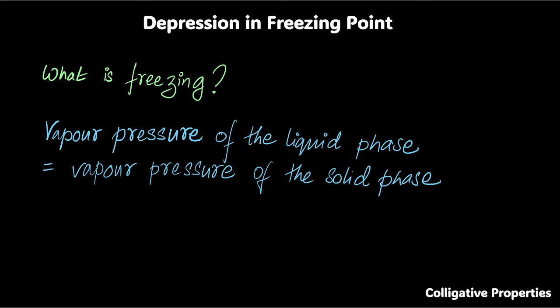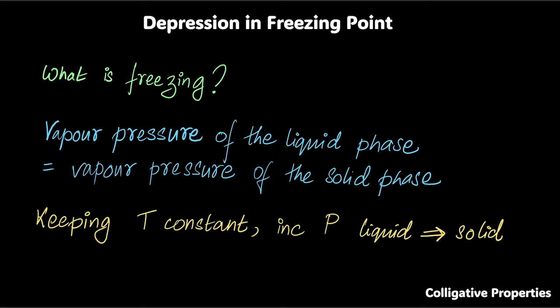When the vapor pressure of the liquid phase is equal to that of the solid phase, we say that something freezes. So, it sounds a little bit of a mouthful, but what I'm trying to say is, if you keep the temperature constant and you keep increasing the pressure, the liquid turns to a solid. This is something you know from lower grades as well. What is interesting here is that atmospheric pressure has no role to play.